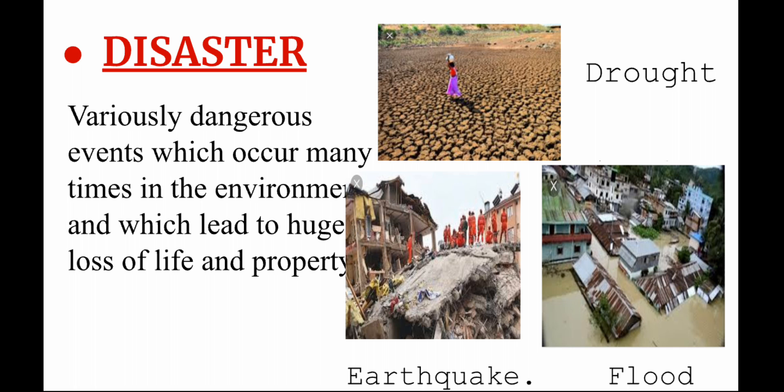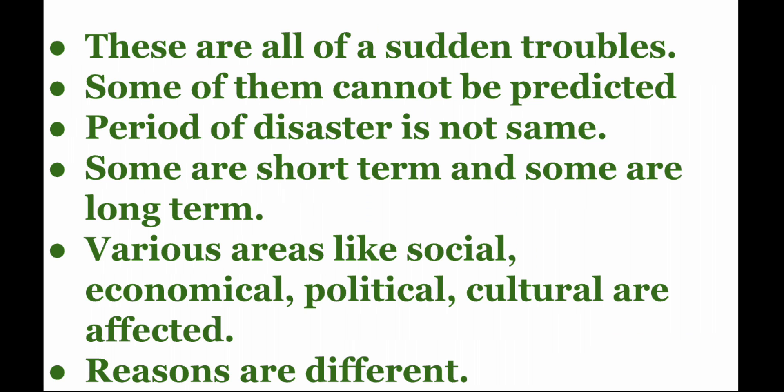The second picture is of an earthquake where you can see that a building has collapsed and many volunteers are working as a rescue team. The third picture is about a flood where the houses are underwater. Disasters are sudden troubles — they are not pre-planned and we cannot stop them. Some disasters like earthquakes, tsunamis, and cyclones can be predicted.